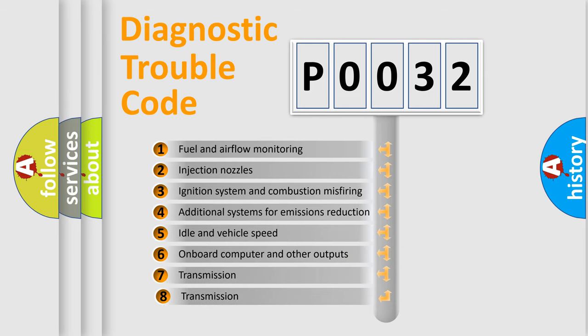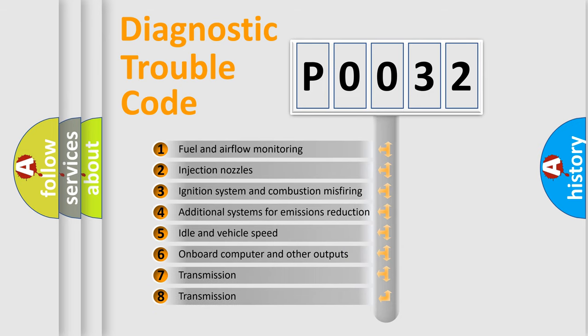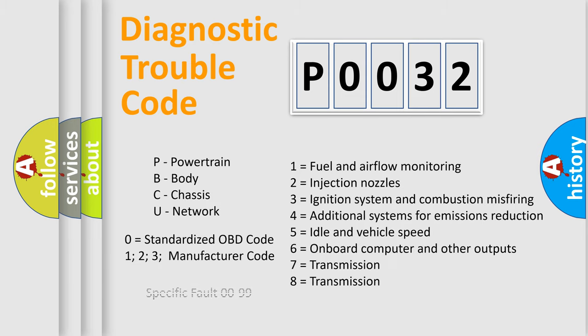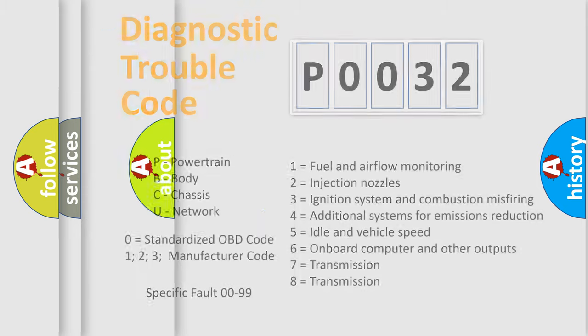The third character specifies a subset of errors. The distribution shown is valid only for the standardized DTC code. Only the last two characters define the specific fault of the group. Let's not forget that such a division is valid only if the second character code is expressed by the number zero.